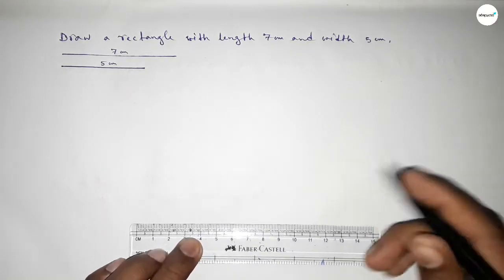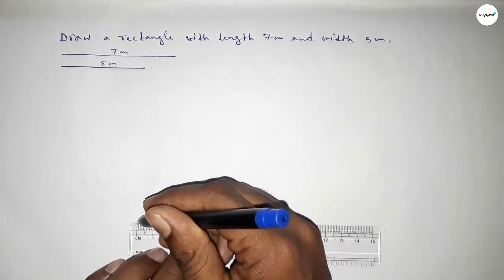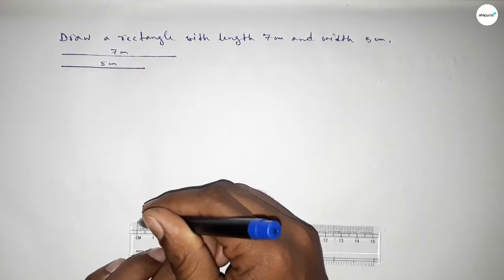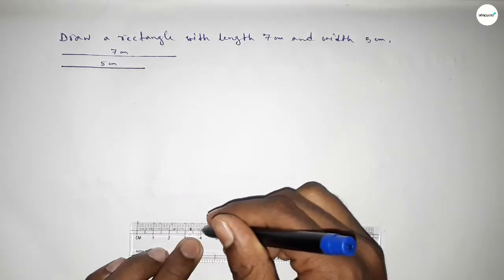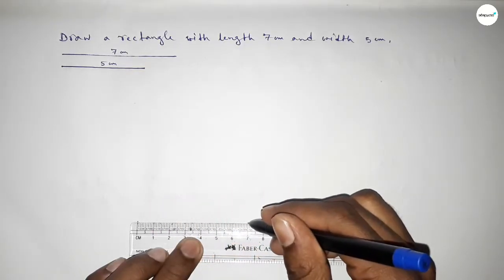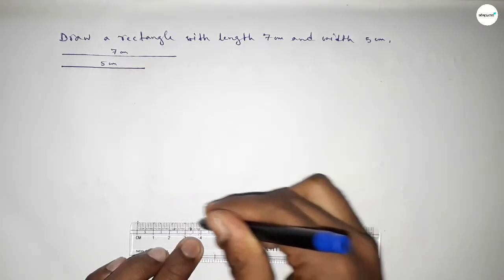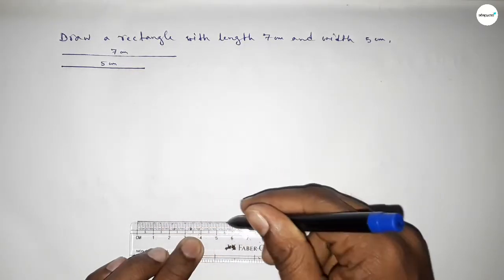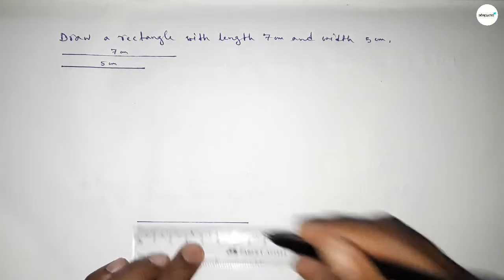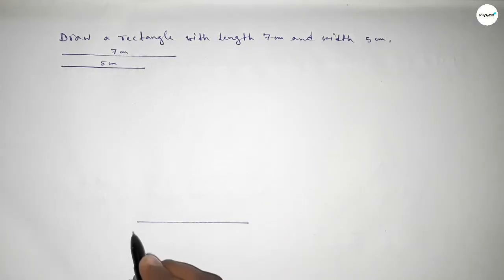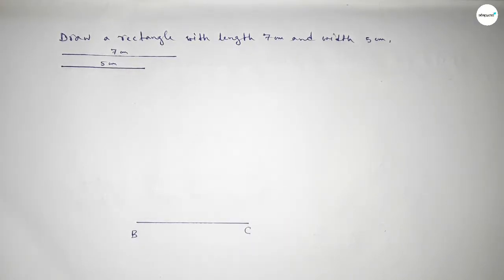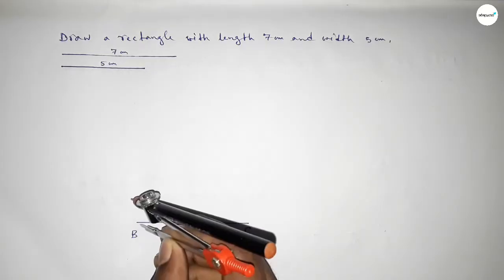First we have to draw a line of length 7 centimeter: 0, 1, 2, 3, 4, 5, 6, 7. Drawing here a line of length 7 centimeter and taking point B and point C.